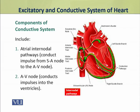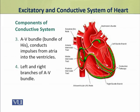The AV node conducts impulses into the ventricles. The fourth component of the conductive system includes the left and right branches of the atrioventricular bundle, also known as the AV bundle, or bundle branches.